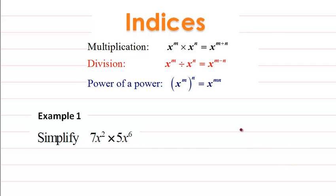Indices. If you have the same base, like x, and we multiply and these bases have different powers, then you simply add the powers. If you're dividing, then you subtract — so x to the power m minus n. If you have a power of a power, you simply multiply their powers, so m times n.